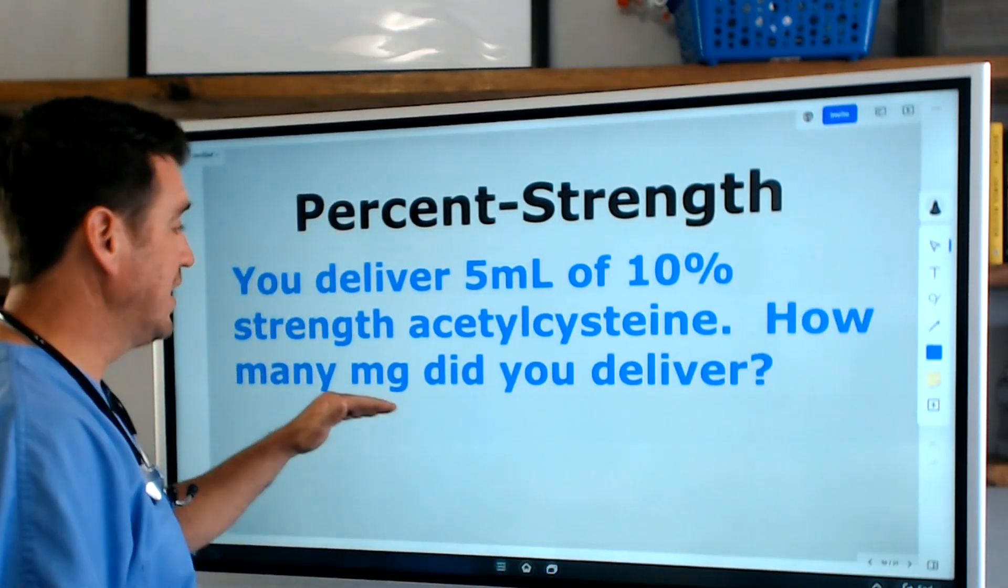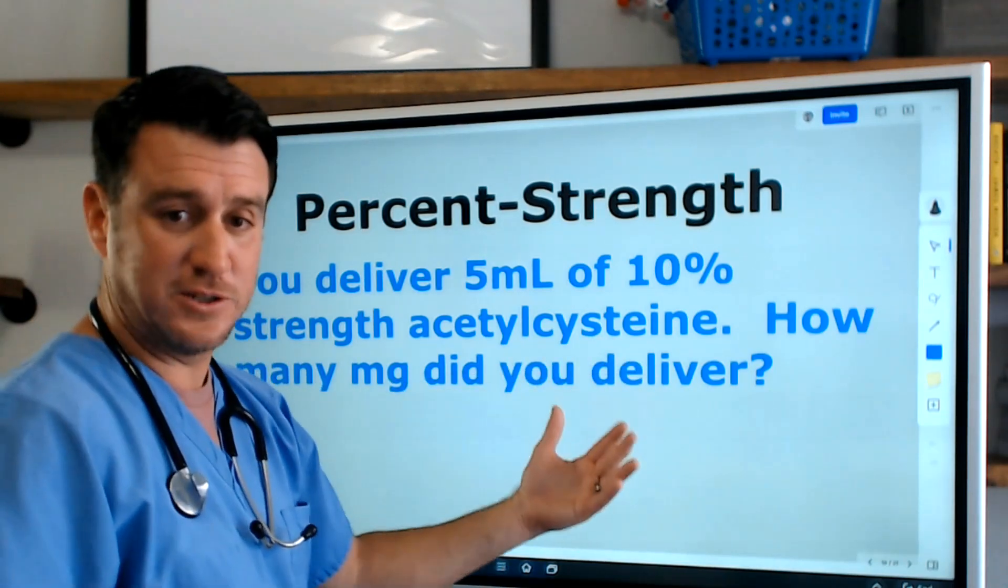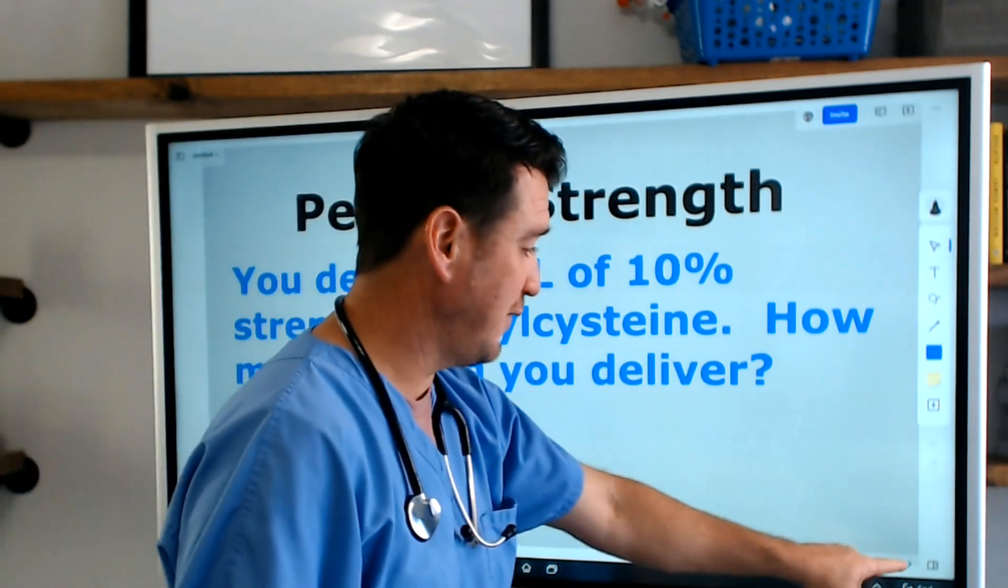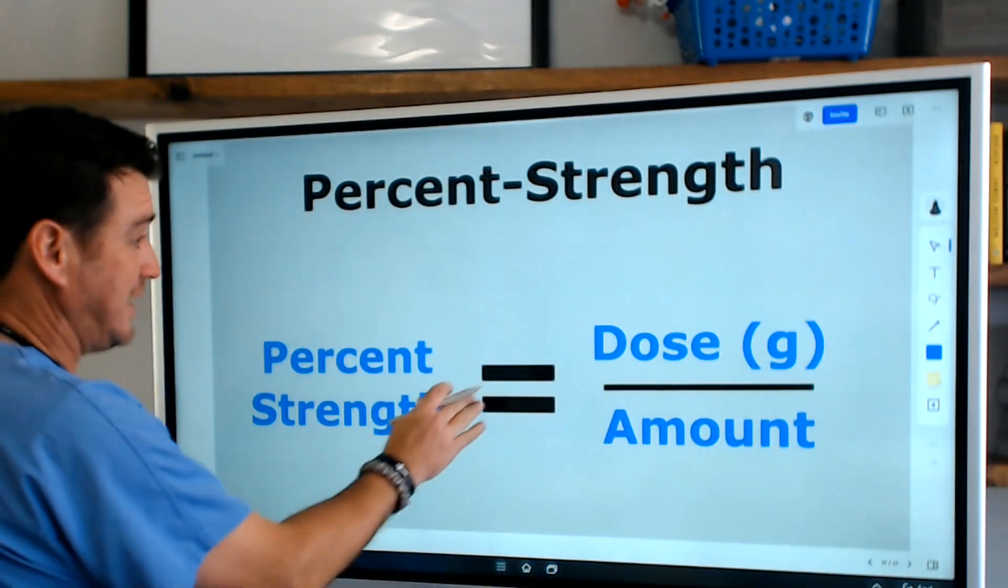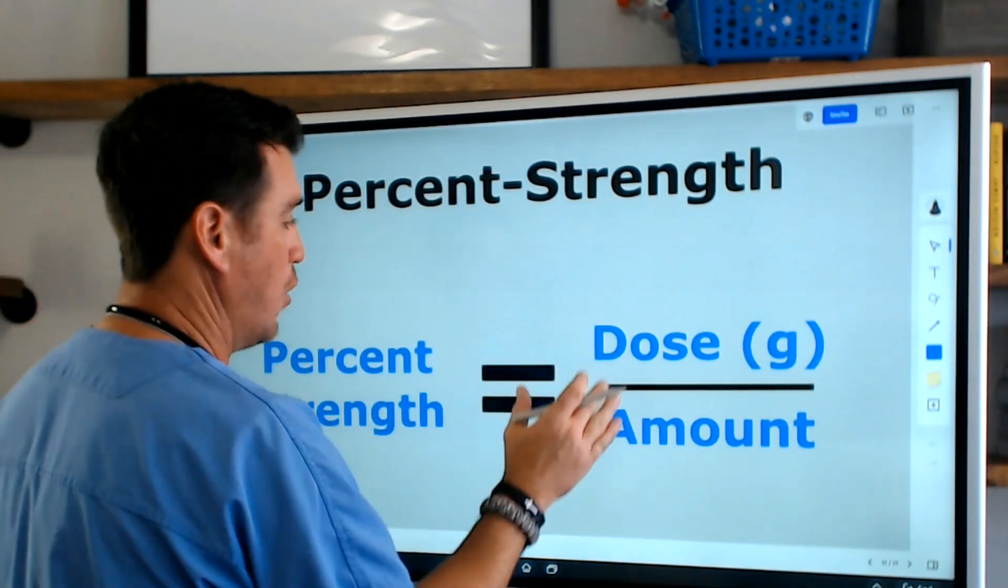The generic name of acetylcysteine—we know the brand name is mucomist. How many milligrams did you deliver? Let's do the math and we'll see. This is the formula that we need: percent strength equals dose over amount. Go back to the scenario.